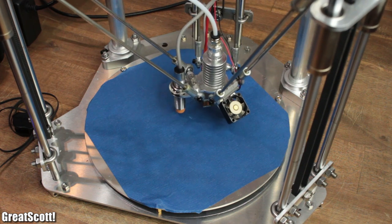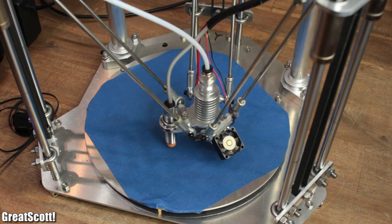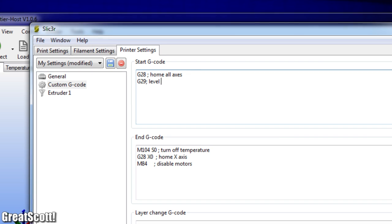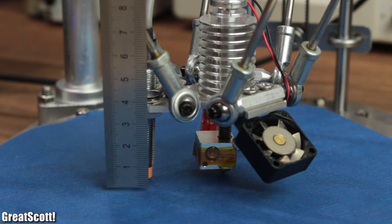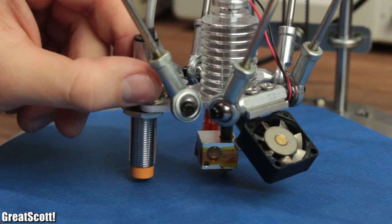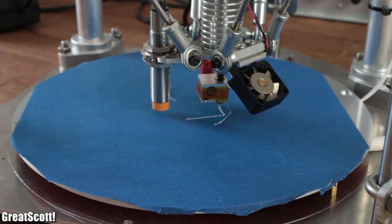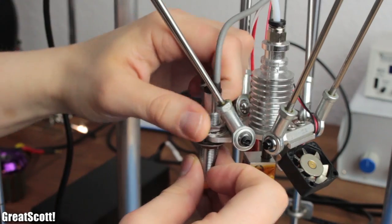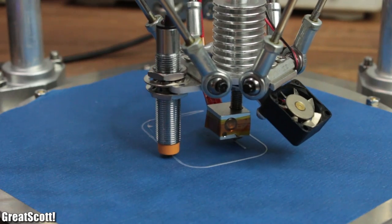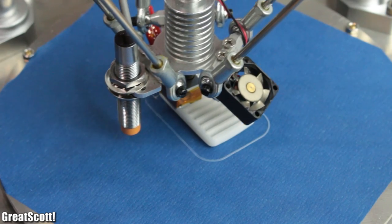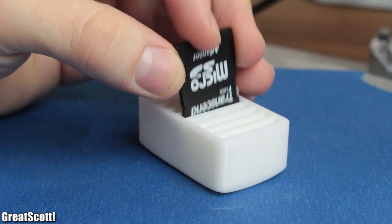Next is the auto-level feature, which gets activated by placing the G29 command in the start check-out section. For that, the inductive sensor needs to be positioned 1mm away from the end of the nozzle. It is not easy to find the sweet spot during the first try, but with a couple of adjustments, it should work out just fine. And during my first test prints, I noticed that the quality is already better than everything I printed with my old 3D printer.